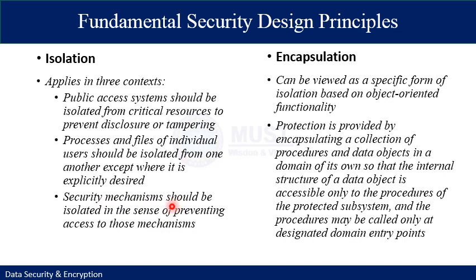The third mechanism is that security mechanisms themselves should be isolated in the sense of preventing access to those mechanisms. This can be implemented using logical or physical isolation. For example, logical access control may provide a means for isolating cryptographic software from other parts of the core system, protecting the cryptographic software from tampering and the keys from displacement or disclosure, helping to secure the actual algorithm that implements the encryption.